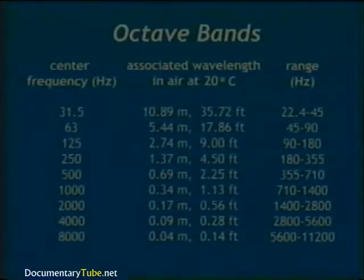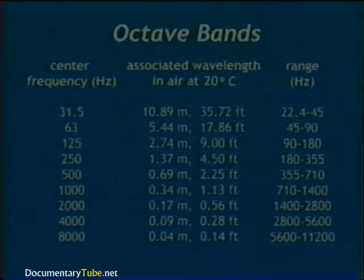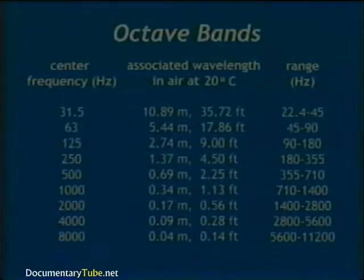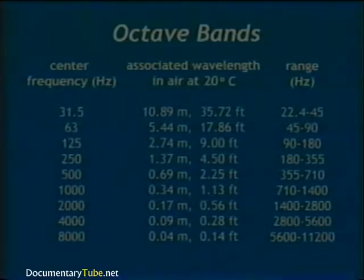The center frequency of each band is one octave higher than the previous band. Notice the center frequencies' associated wavelengths: for the frequency of 31.5 Hz, the wavelength in air is 10.89 meters or 35.72 feet. For the frequency of 8,000 Hz, the wavelength is 0.04 meters or 0.14 feet.